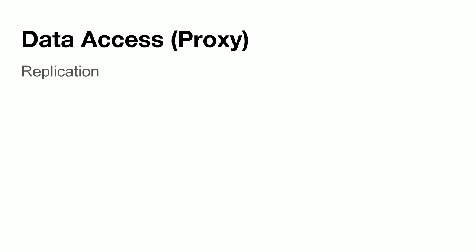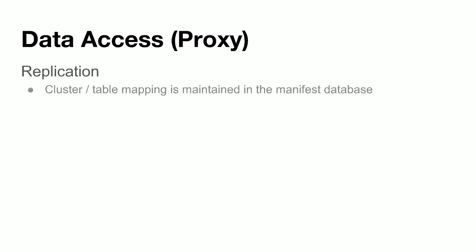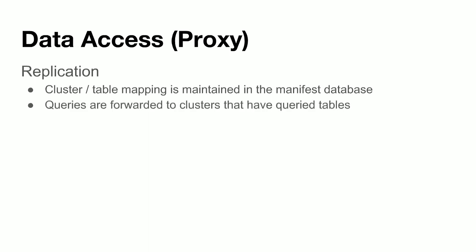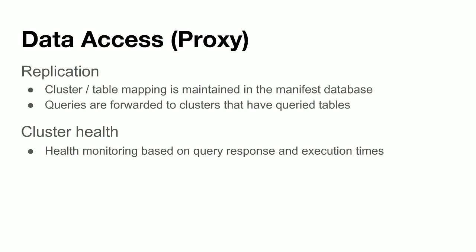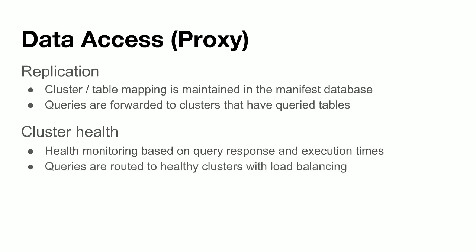On the proxy side, we have transparent support for replicated clusters to all our users. The cluster-to-table mapping is maintained in the manifest database, and when an incoming query arrives, the proxy can see which cluster has all the tables in that query and route it to the appropriate cluster. The proxy is also aware of the health of individual clusters — if a cluster is down for maintenance or upgrades, the proxy is aware. It monitors based on query response and execution times and uses this information to route queries to healthy clusters and do load balancing to ensure we avoid hot spots on various clusters.